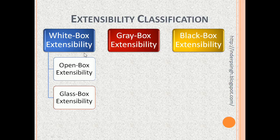White box extensibility can be further subdivided into open box extensibility or glass box extensibility. In open box extensibility, the original source code is changed. Open box extensibility needs the original source code to be available and the software license must allow modifications. It is required when developers need to fix bugs or write a new version of their software.